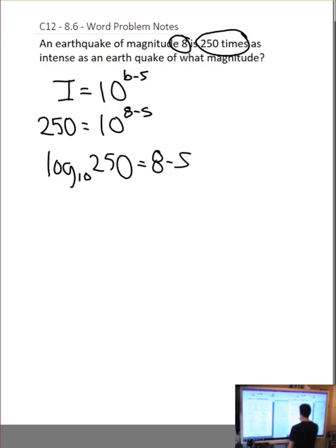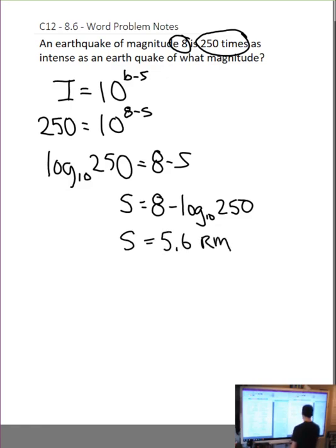So log base 10 of 250 equals 8 minus S. Solving for S, adding S to both sides, S equals subtracting log 250, 8 minus log base 10, 250. Therefore, S equals 5.6 Richter magnitude.